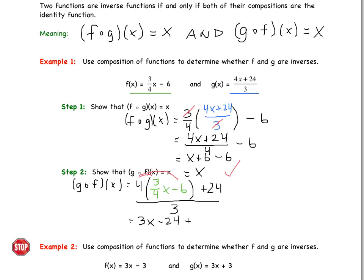Then we've got that plus 24, and this whole thing is over 3. So order of operations tells us the 24s cancel, so we are just left with 3x over 3, and now our 3s are going to cancel, leaving us with our final answer of x, which is our identity function.